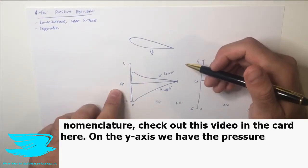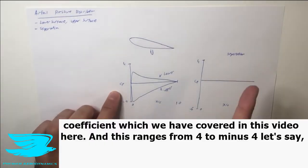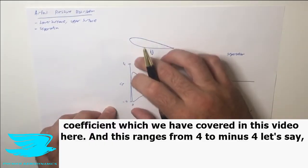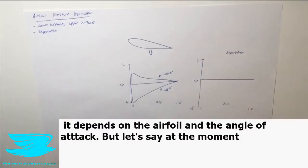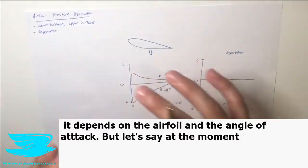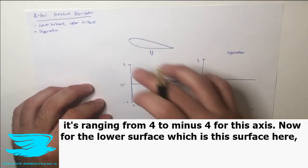On the y-axis we have the pressure coefficient, which we have covered in this video here. This ranges from 4 to minus 4. It depends on the airfoil and the angle of attack, but let's say at the moment it's ranging from 4 to minus 4.